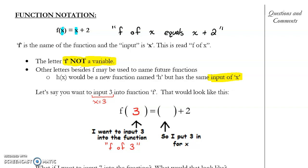Because I'm inputting 3, I have to put it everywhere x was. It was f of x was equal to x plus 2, so f of 3 is equal to 3 plus 2. My answer then becomes f of 3 equals 5. I input 3, my output is 5.